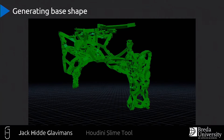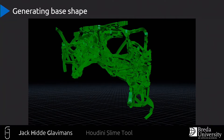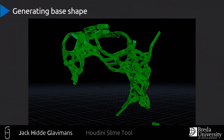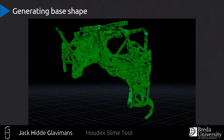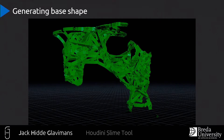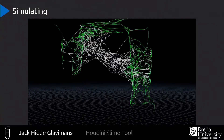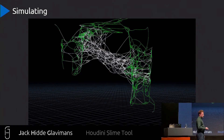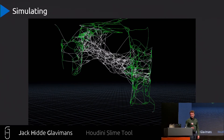Here you see different amounts of density lines and how it affects the shape. This is then the curve editor mode as you see it in Unreal.